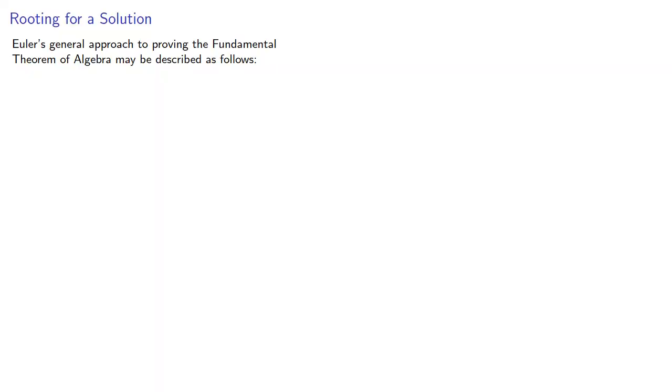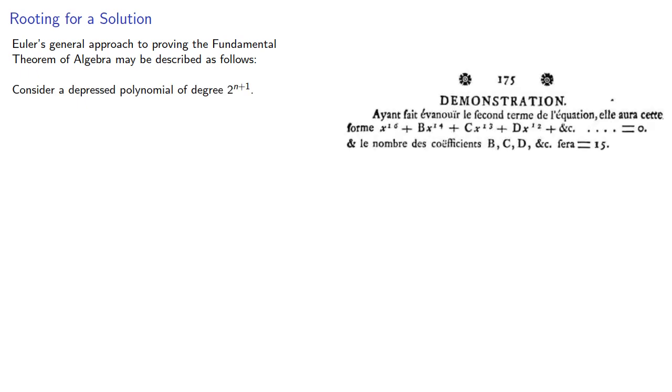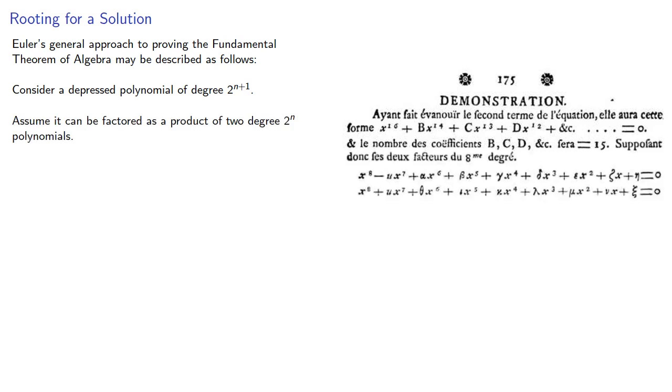Euler's general approach to proving the fundamental theorem of algebra may be described as follows. Consider a depressed polynomial of degree 2 to the n plus 1. Assume it can be factored as a product of 2 degree 2 to the n polynomials.